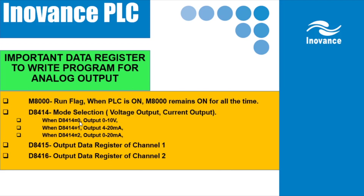Another important data register is D8415 — this is the actual output value register. Whatever you move to this register will be the output value. For example, if you want to transfer 5 volts to the output, in Inovance PLC the scaling ratio is 0 to 2000 — if you move 2000 to D8415 the output will be 10 volts. So if you want 5 volts you move 1000. The scaling is linear: 0 to 10 volts equals 0 to 2000.